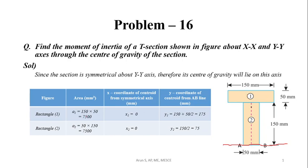For the centroid of rectangle one, since it is a rectangle, the centroid lies at the midpoint. The X-coordinate: since it lies on the YY axis itself, x₁ will be 0. For y₁, measured from the AB line.